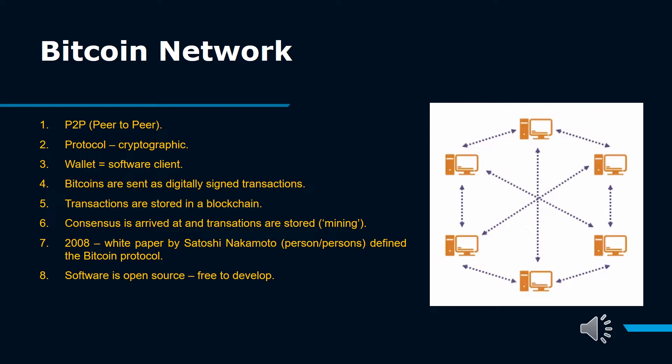Satoshi Nakamoto, the designer of Bitcoin, claimed that the design and coding of Bitcoin began in 2007. In 2008, a white paper by Satoshi Nakamoto defined the Bitcoin protocol. The project was released in 2009 as open-source software.